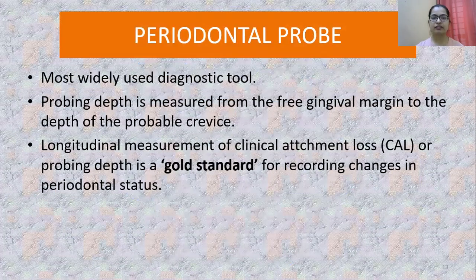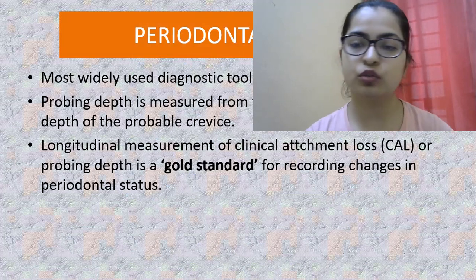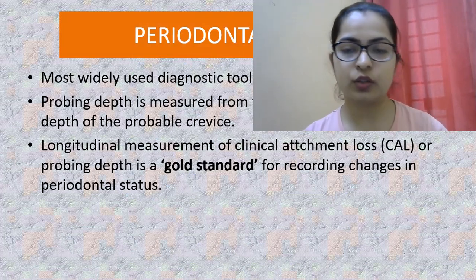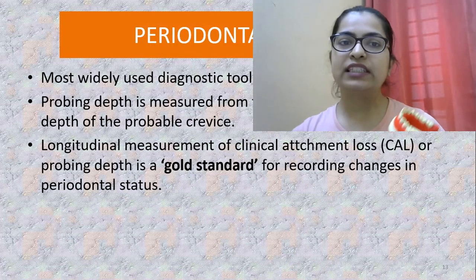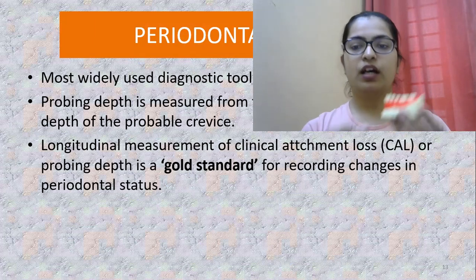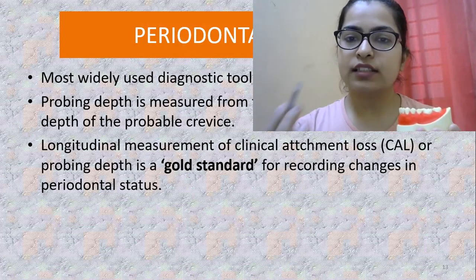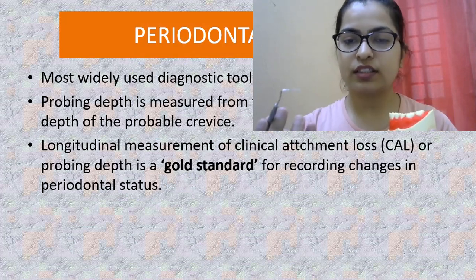The periodontal probe is the first instrument used intra-orally on any patient to assess clinical condition and is the most widely used diagnostic tool. Probing depth is measured from the free gingival crest to the depth of the probable crevice. Before moving on to different types of periodontal probes, I would like to show how probing is done, since correct technique gives accurate knowledge of the nature of the periodontal condition. Consider this as the mandible of the patient and the red part as the gingiva.